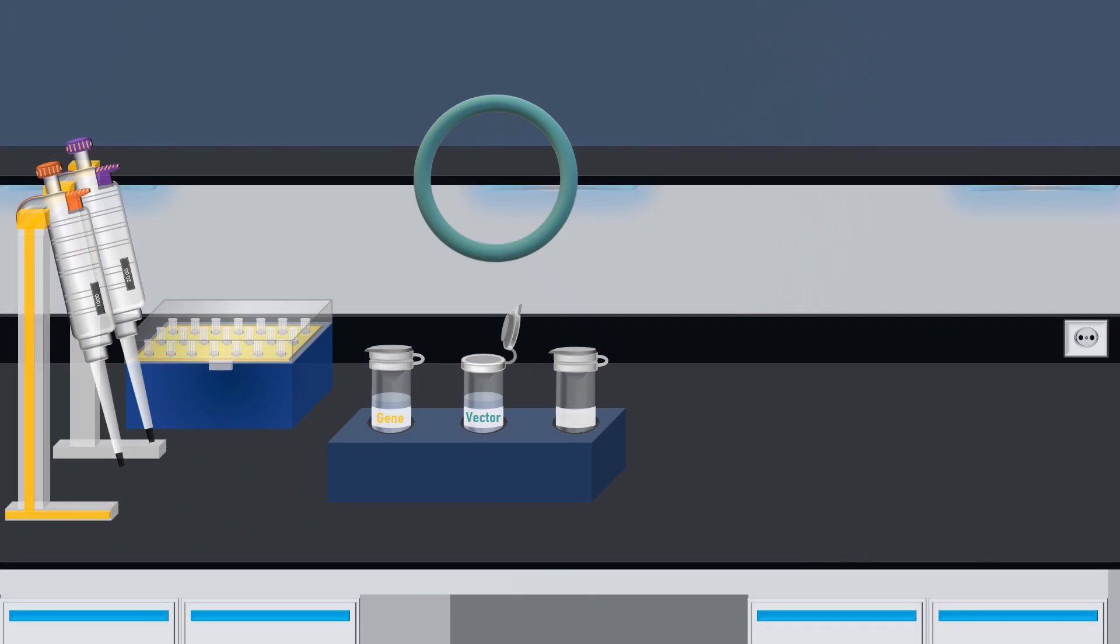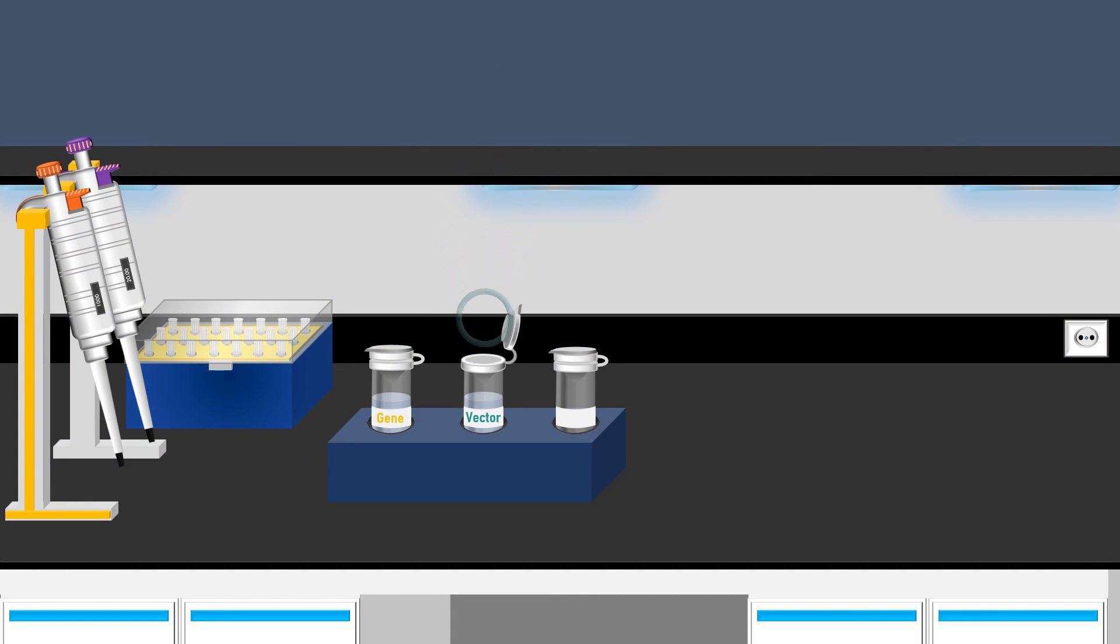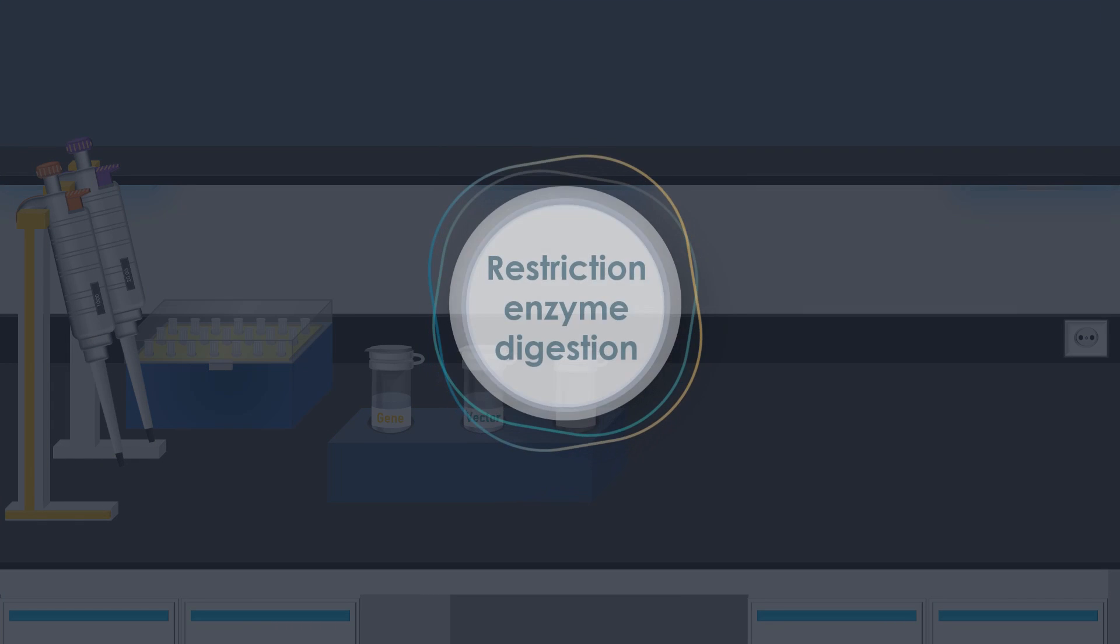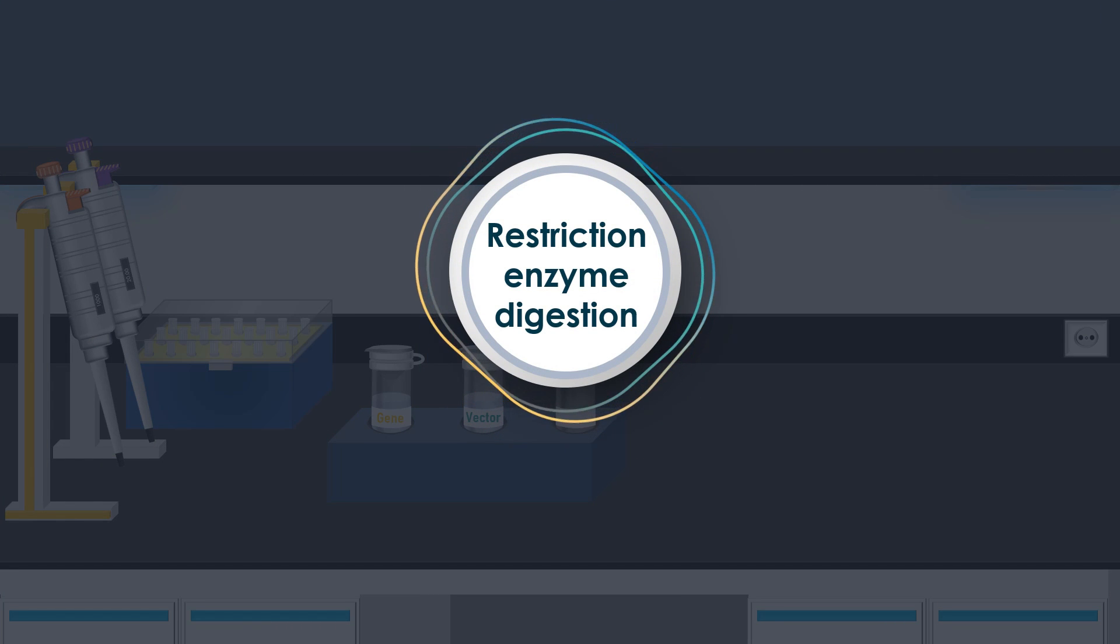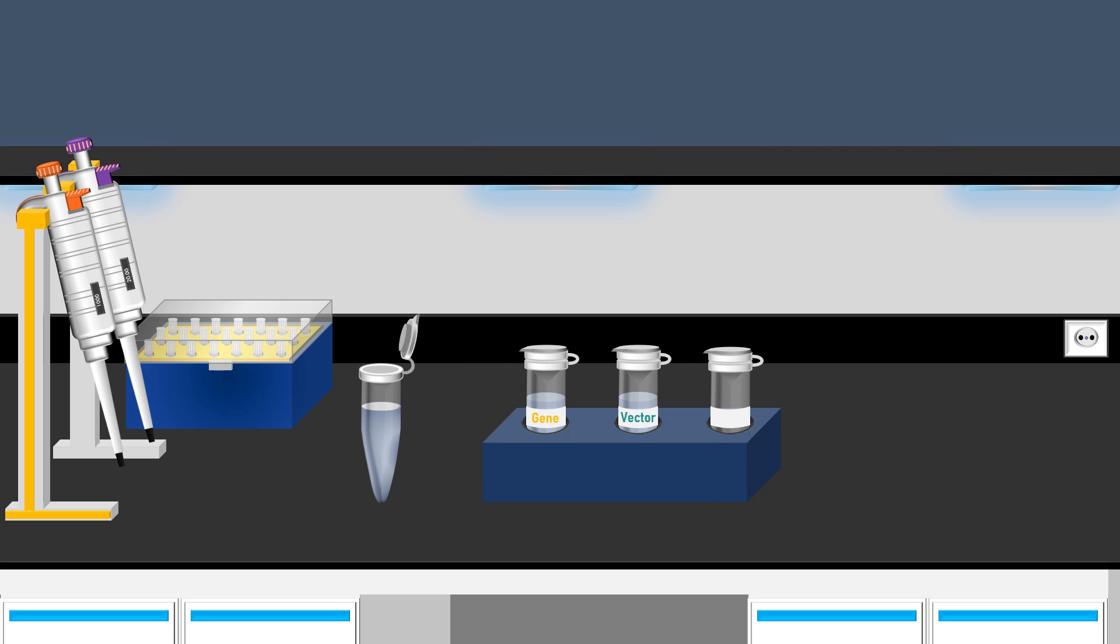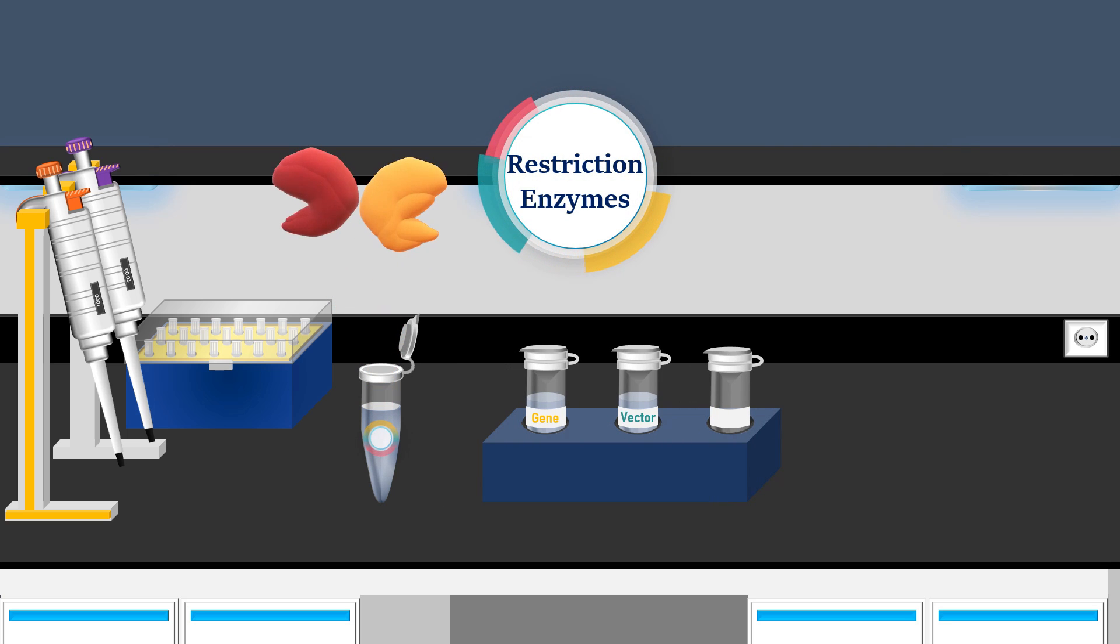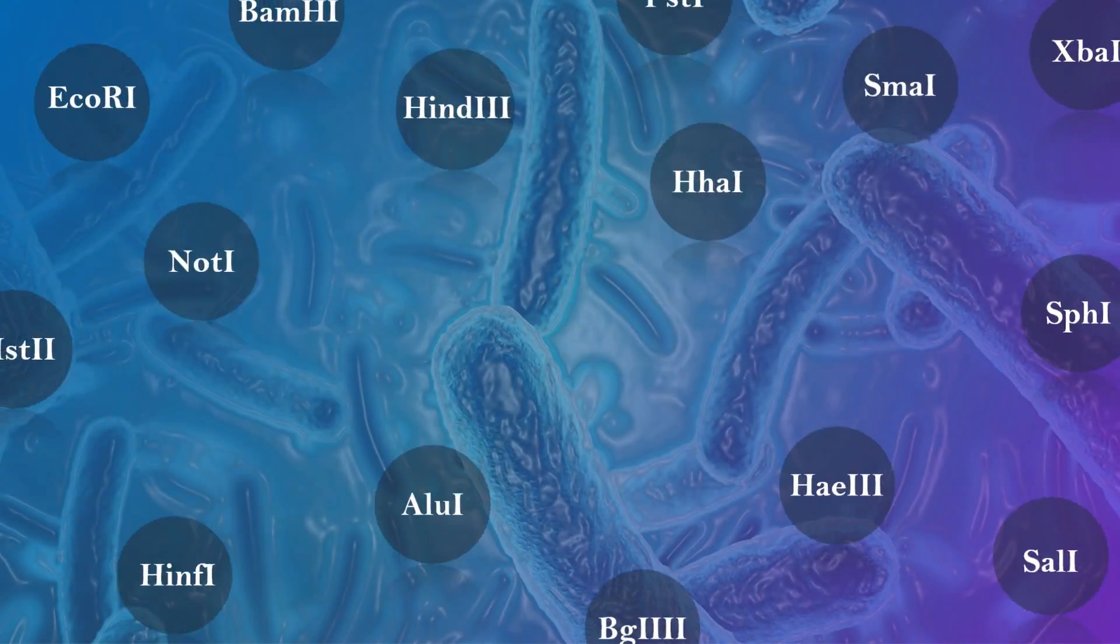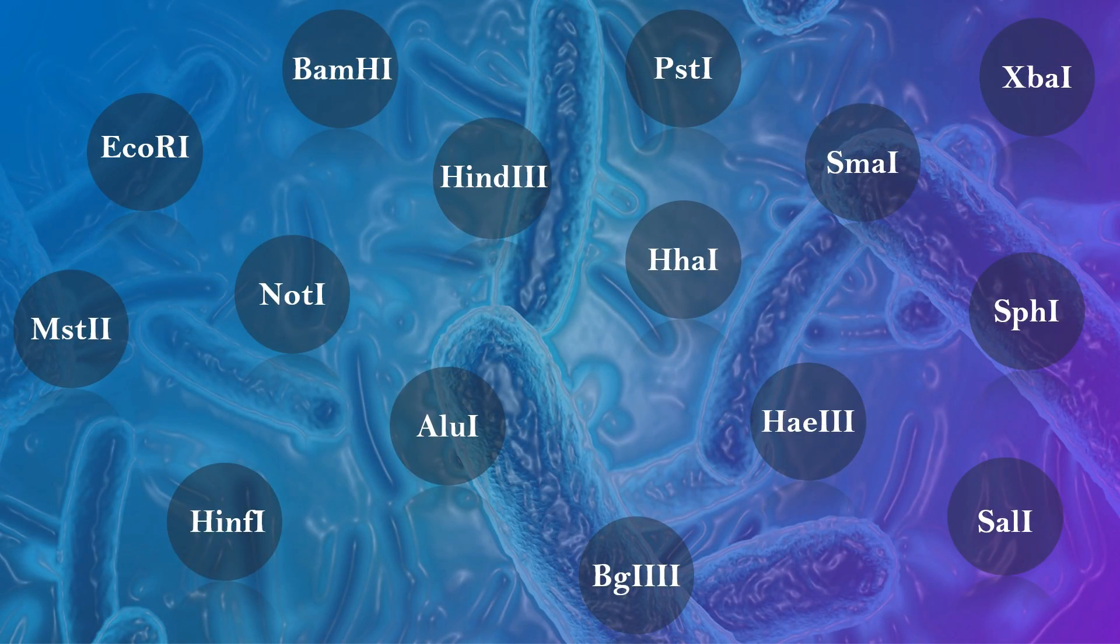Following the preparation of the genetic material, the subsequent step in the cloning procedure involves restriction enzyme digestion. In this process, DNA can be precisely cut at specific sites using specific enzymes. Numerous restriction enzymes have been identified from various bacterial strains.